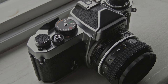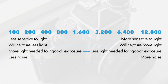When your camera doesn't need as much light you can bump your ISO down, and that's represented in this chart here. Normal camera ISO ranges are 100, 200, 400, 800, and so on. The lower the number, the less sensitive your camera is to light; the higher the number, the more sensitive it is to light.